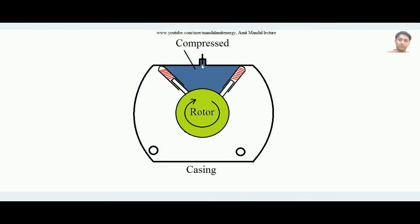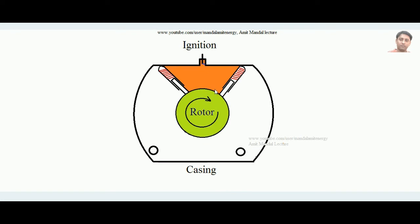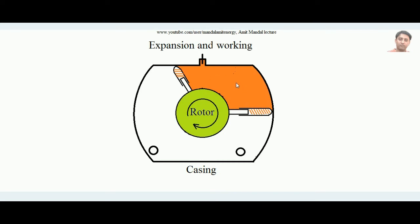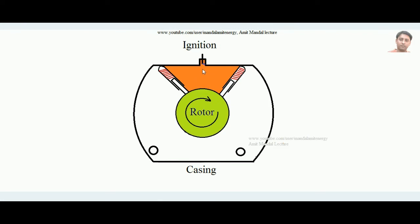The charge is dragged toward a low-volume region by the apex seals and casing system, so it is compressed. Once fully compressed, the spark plug introduces a spark and the entire charge is ignited. Heat is added and the burnt gases want to expand. Since the rotor is rotating clockwise, the charge has the opportunity to expand on the right-hand side, forcing the apex seals and rotor to continue moving clockwise — this is the power stroke where work is done.